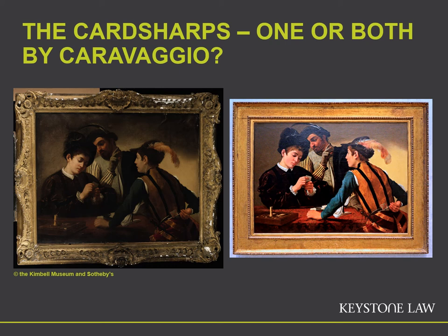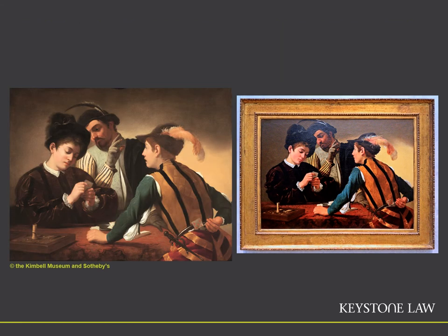So which is which? Mr Thwaites' painting is the one on the left in the slightly more battered-looking frame and the painting looks a little dirtier, whereas the original in the Kimball Museum is the one on the right. You have to bear in mind that the experts would have physically inspected Mr Thwaites' painting, so they wouldn't have just looked at images. In case you were fooled by the old frame and the dirty-looking nature of the painting, here you can see Mr Thwaites' painting after it had been cleaned and restored, so you can compare the two side by side.